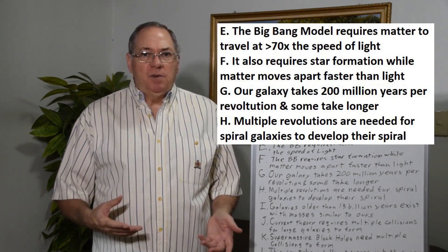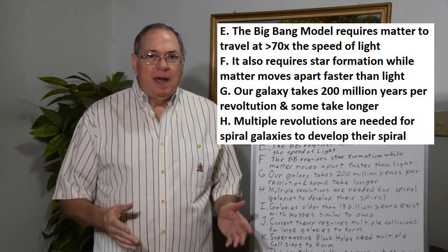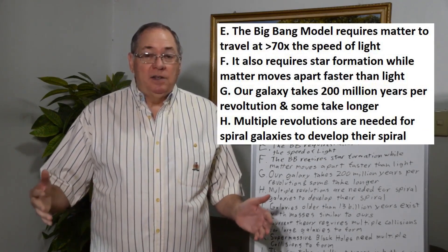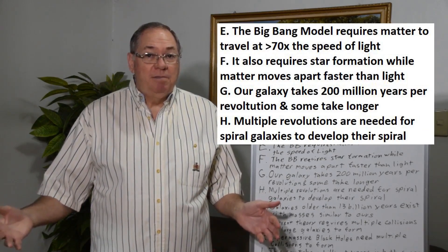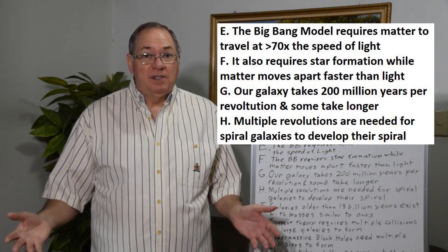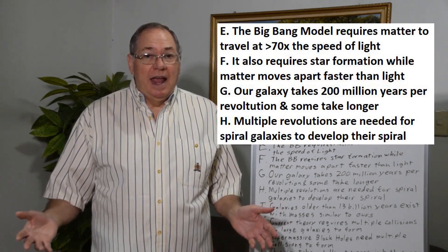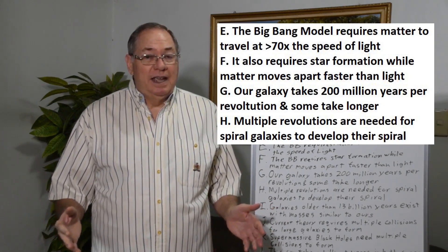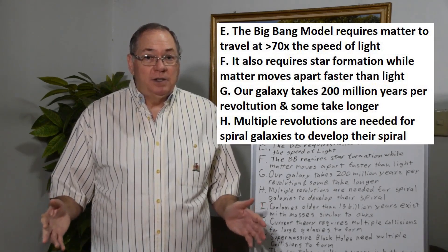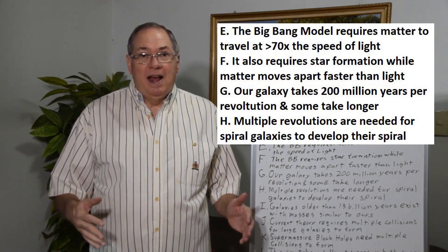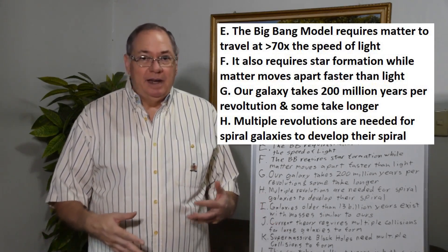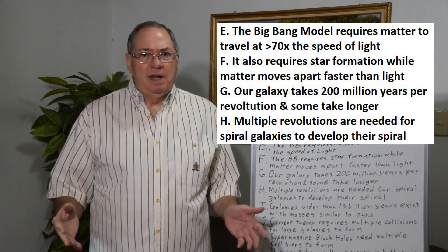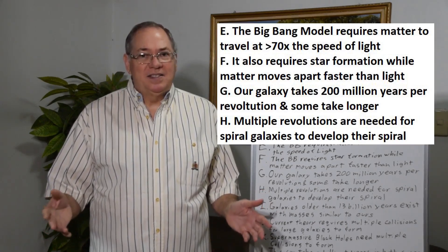Now there are lots of problems with this. The first I always like to go back to: all the matter had to expand to greater than 13 billion light-years before star formation even started. That means 70 times the speed of light, if averaged over that 200 million years — possibly faster during an inflationary period as the theory says. But matter doesn't move 70 times the speed of light. It doesn't.